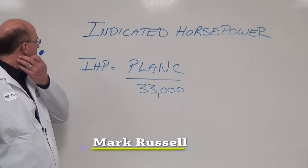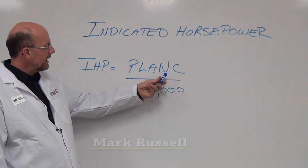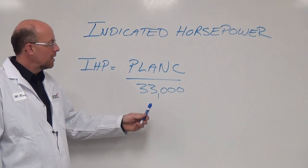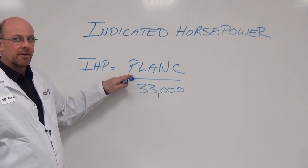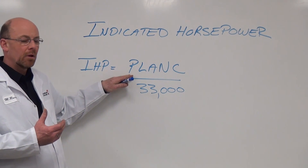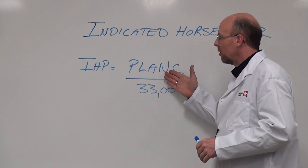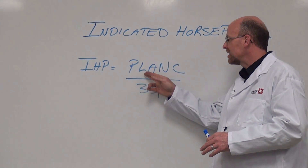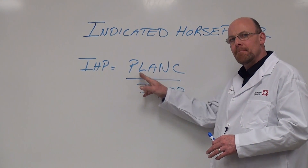Indicated horsepower equals PLANK divided by 33,000. When we take a look at the factors in here — and when we talk about a factor, it's a multiple — we need to establish what each value is as we define PLANK.